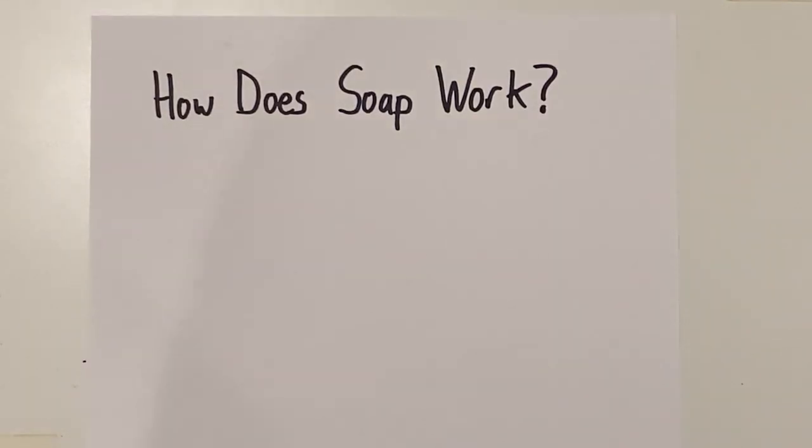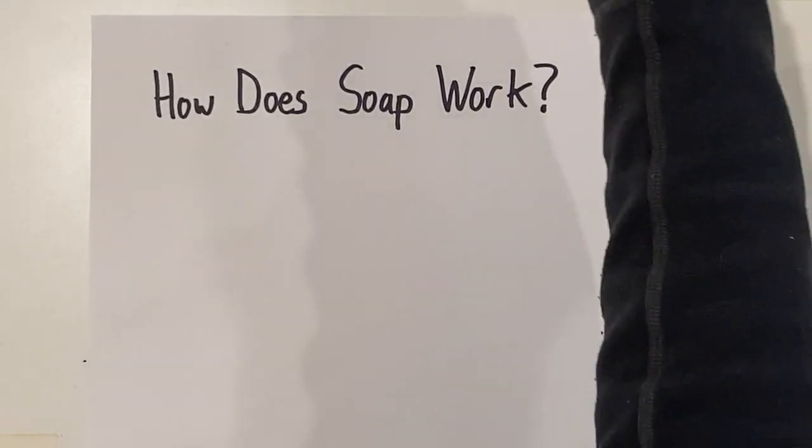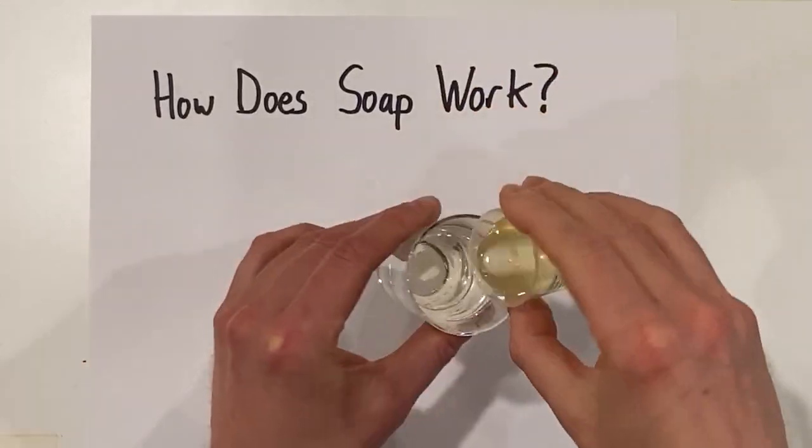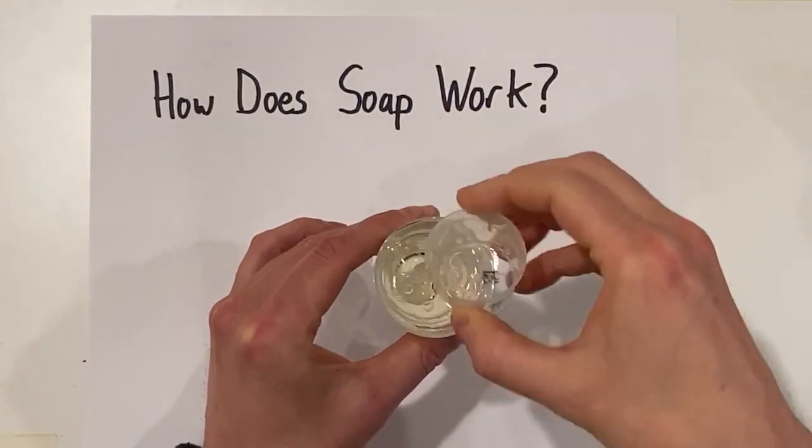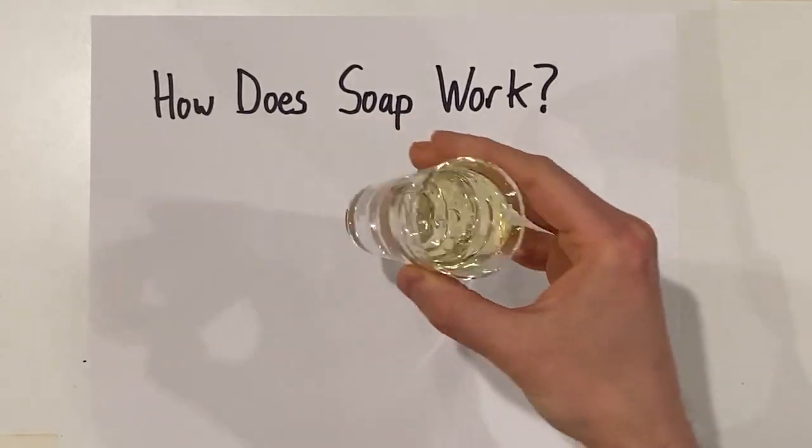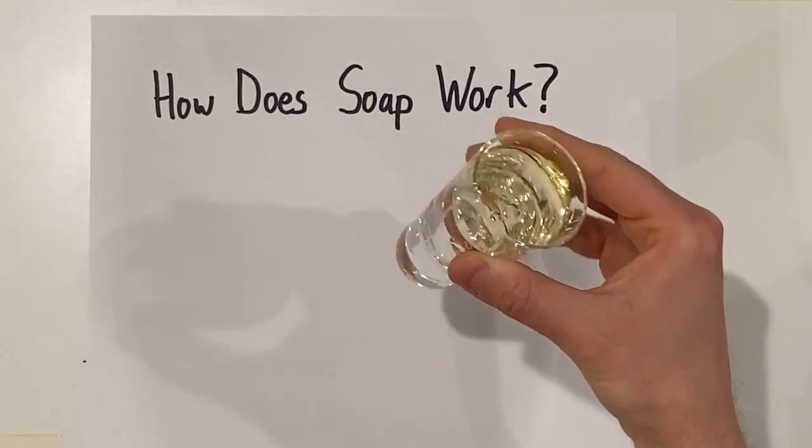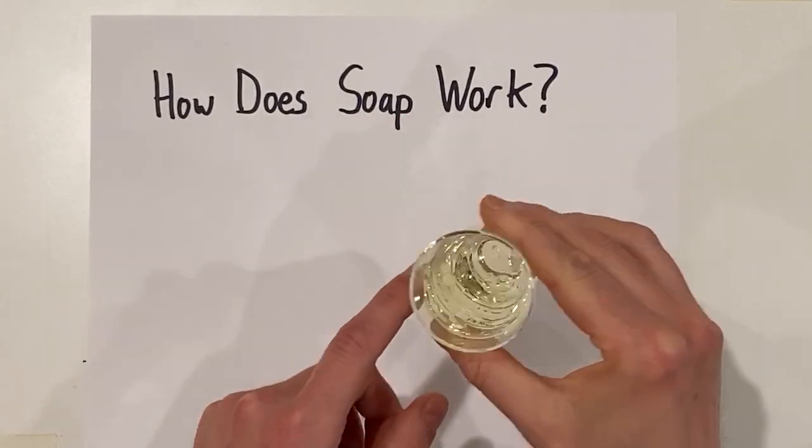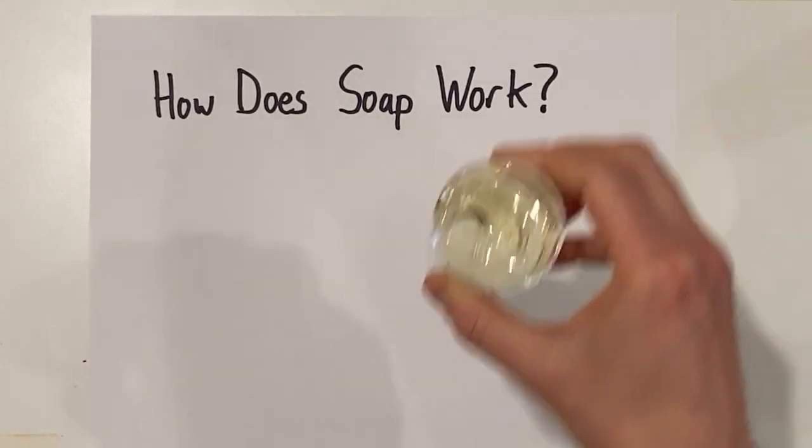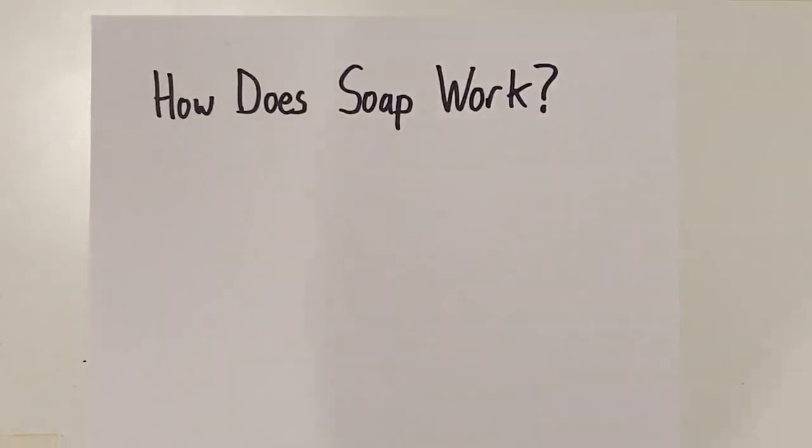Before we talk specifically about soap, let's talk about oil and water. We'll learn about why soap is so good at cleaning oil off things. If I pour some oil and water, we'll see that they actually don't mix. The oil floats to the top and the water stays on the bottom. So why don't they mix? Well, it has to do with the molecular structure of both oil and water.